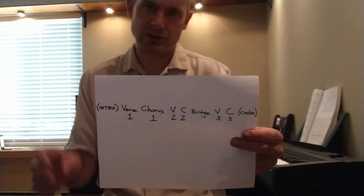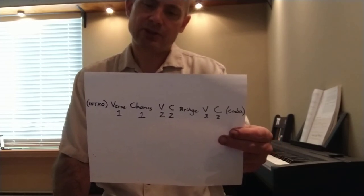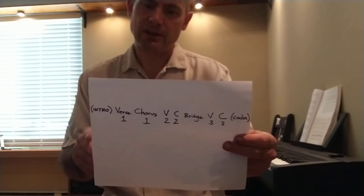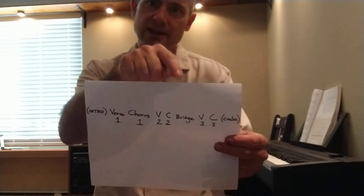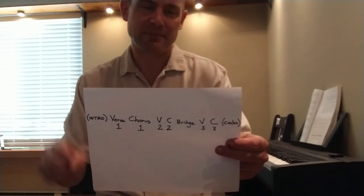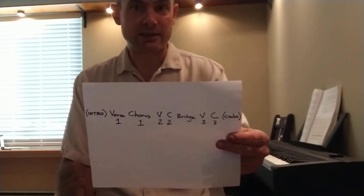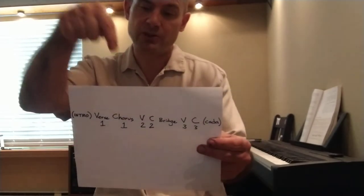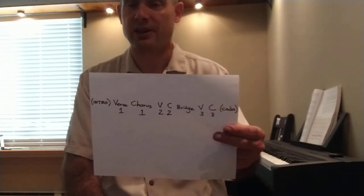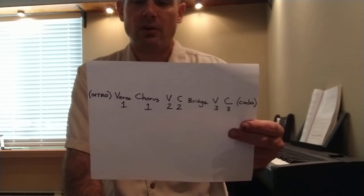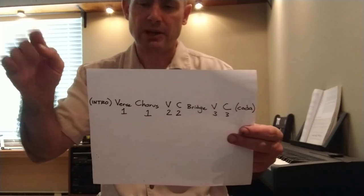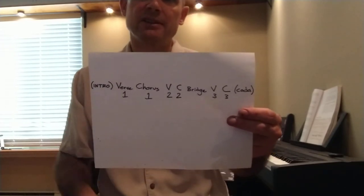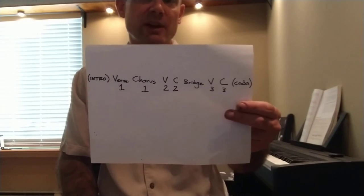We can tell the difference between the verse and the chorus — something changes. After that first chorus, we normally get another verse. The verses, although the notes repeat from one verse to the next, the words are different — so we have some continuity and some variety right there. When we get to the second chorus, not only are the notes the same as the first chorus, but the words are the same as well. This pattern — verse, chorus, verse, chorus — is starting to get kind of predictable.